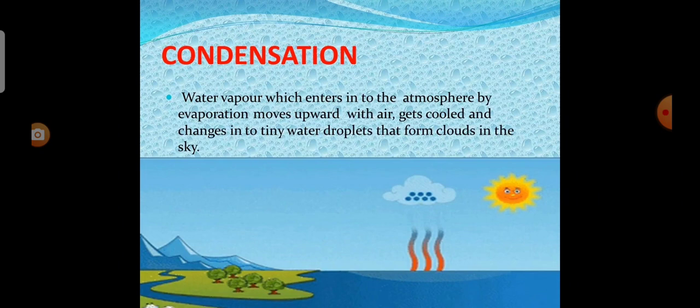Next one is condensation. Water vapor which enters into the atmosphere by evaporation moves upward. The air gets cool and changes into tiny water droplets that form clouds in the sky.